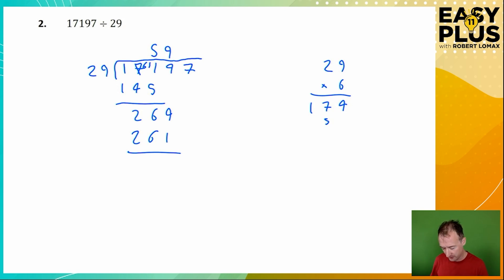How do we do that so quickly without needing to do a multiplication over here? Well, we say that 10 times 29 is 290, and if you want to subtract 29 from 290, just take away 30, which is 260, and add another one back on. Now we need to subtract, and we need to bring down the 7.